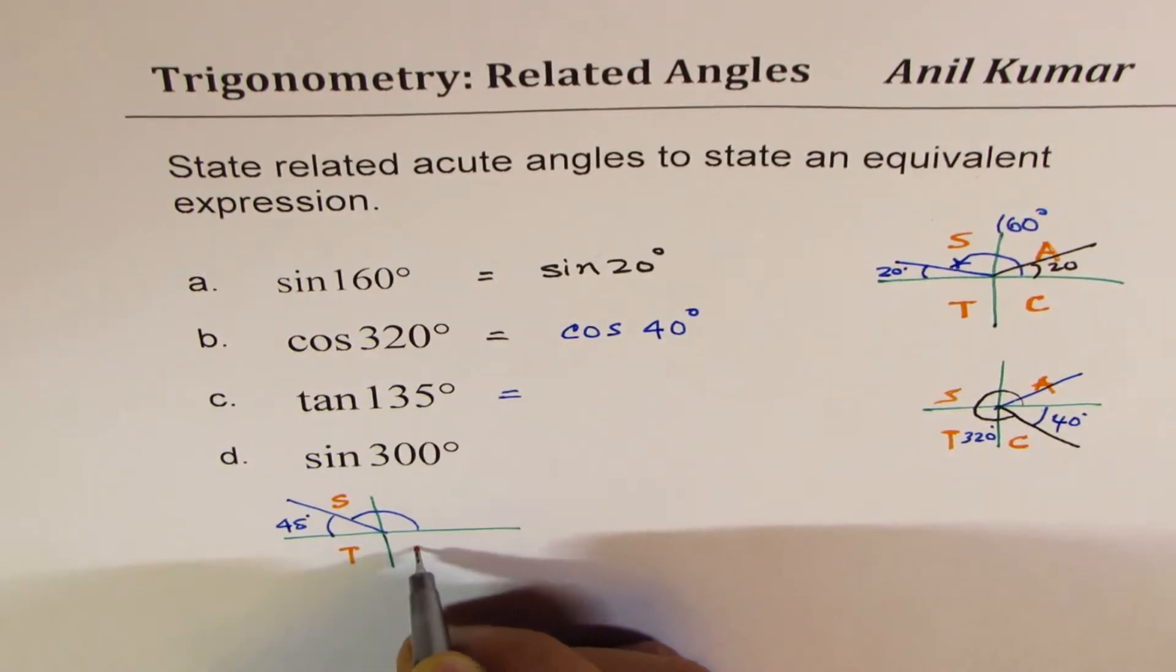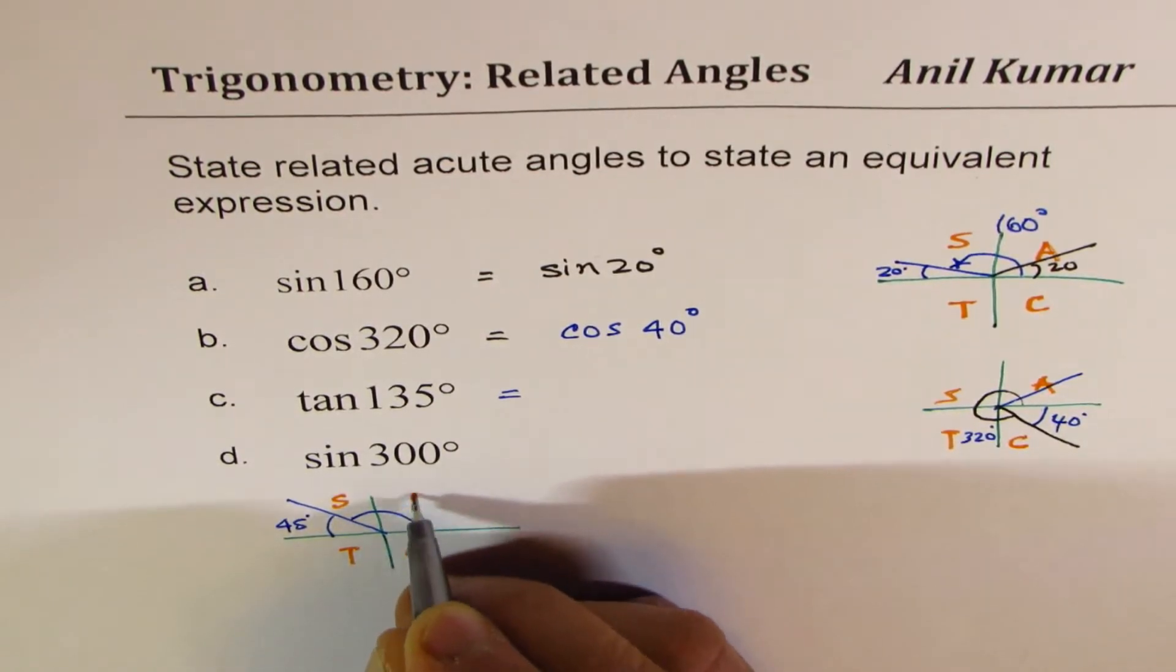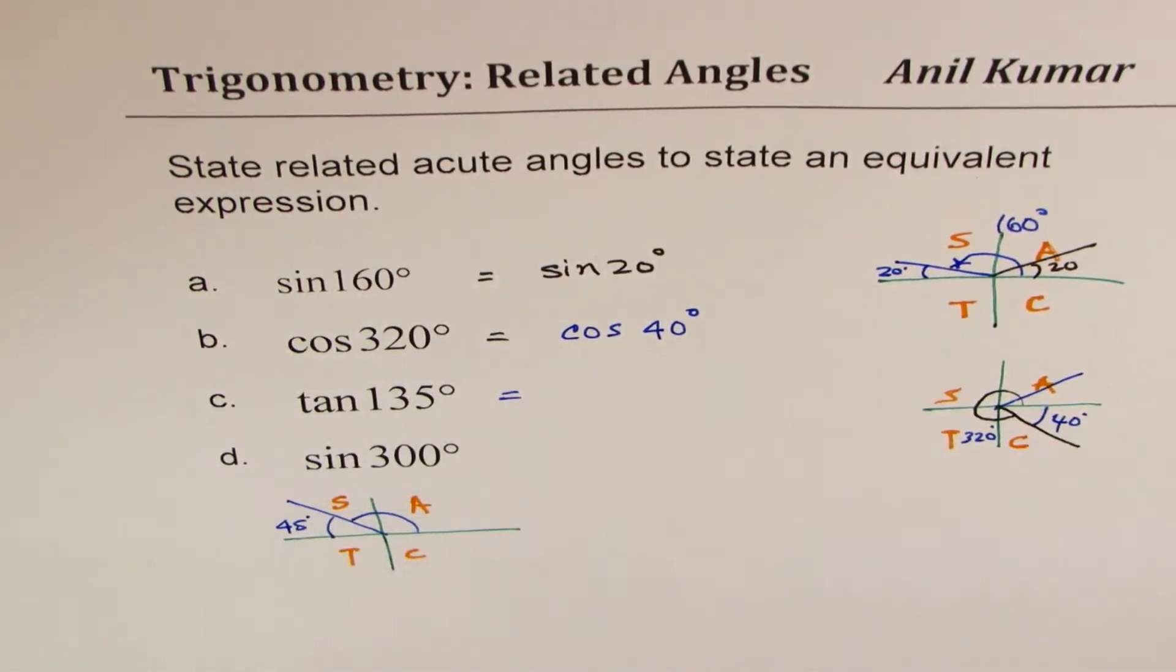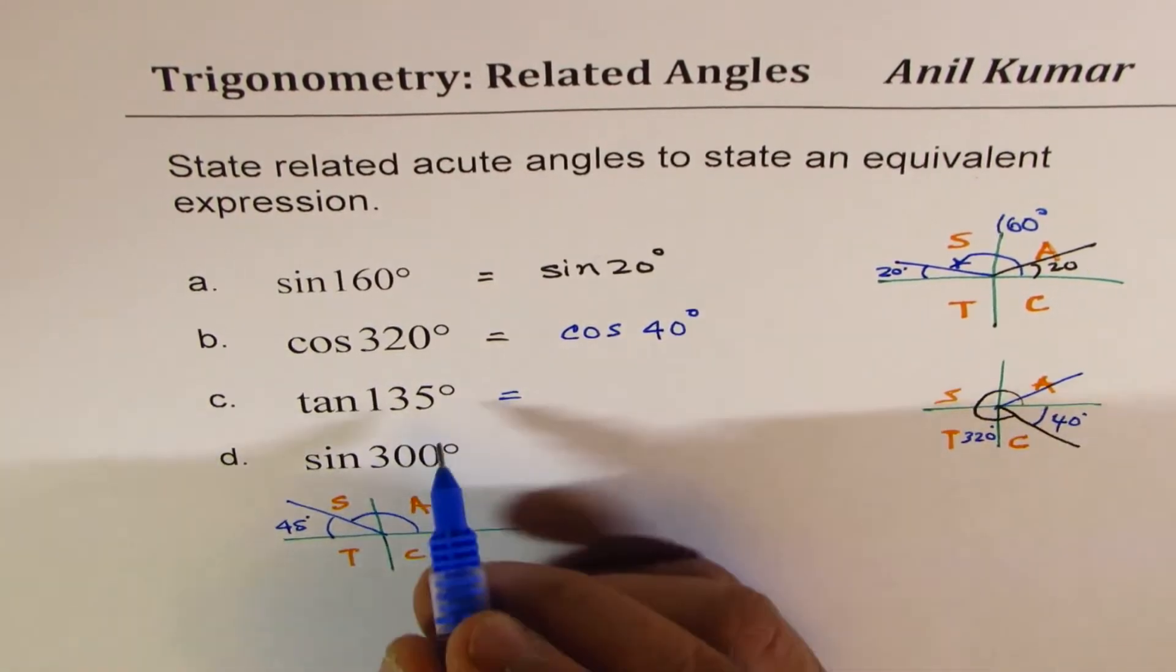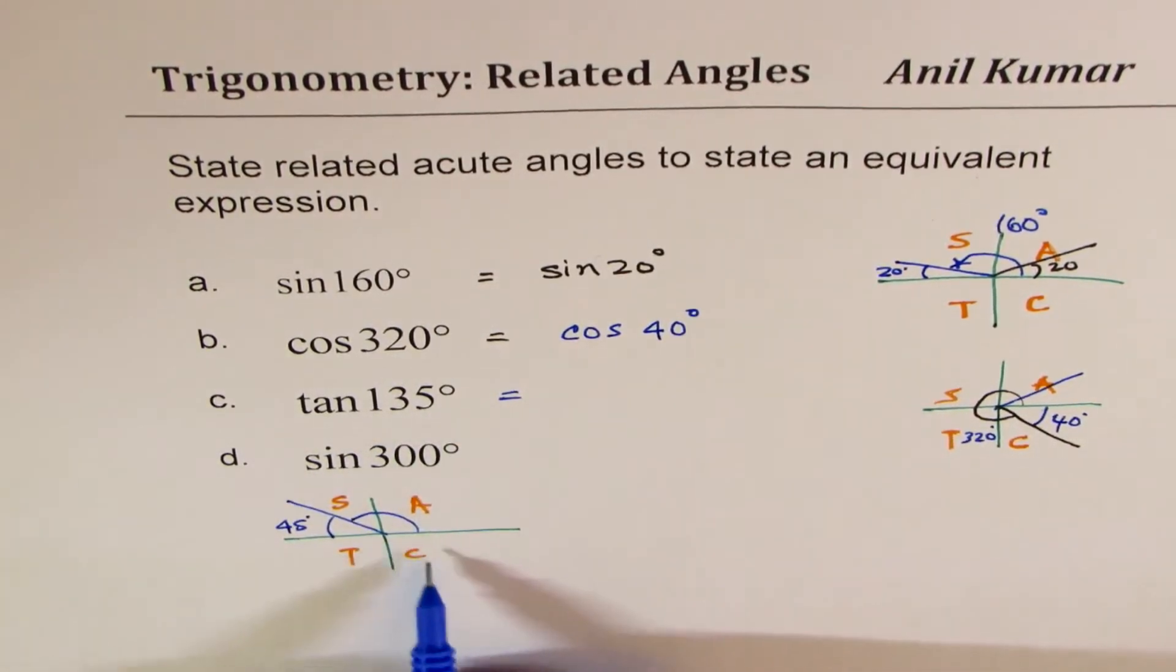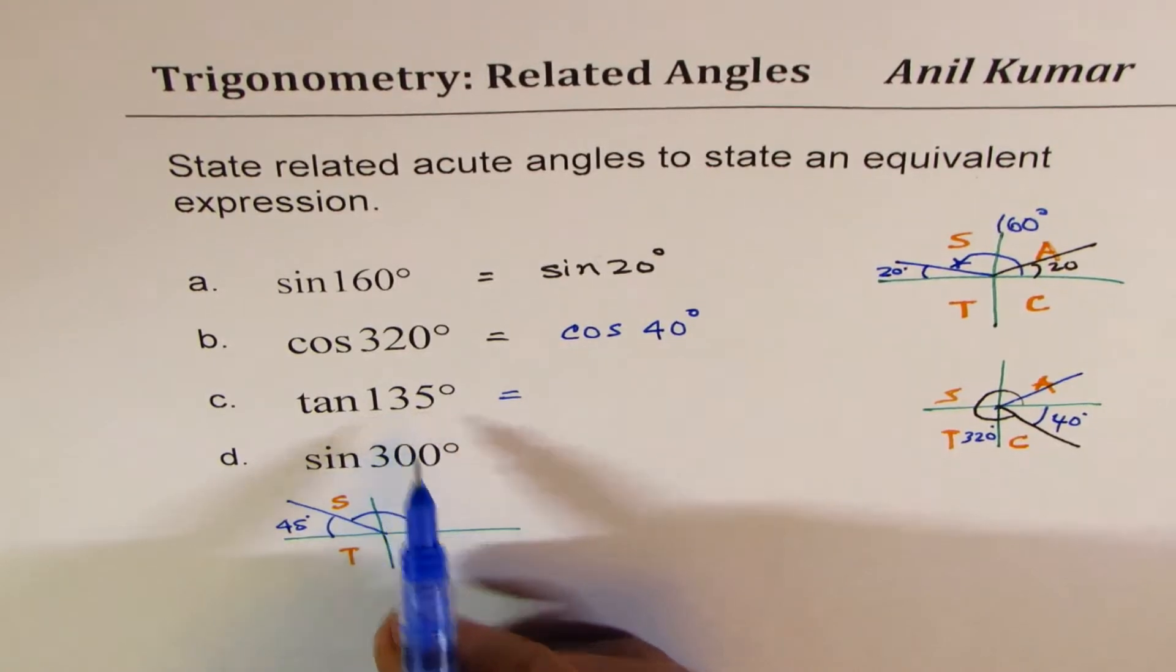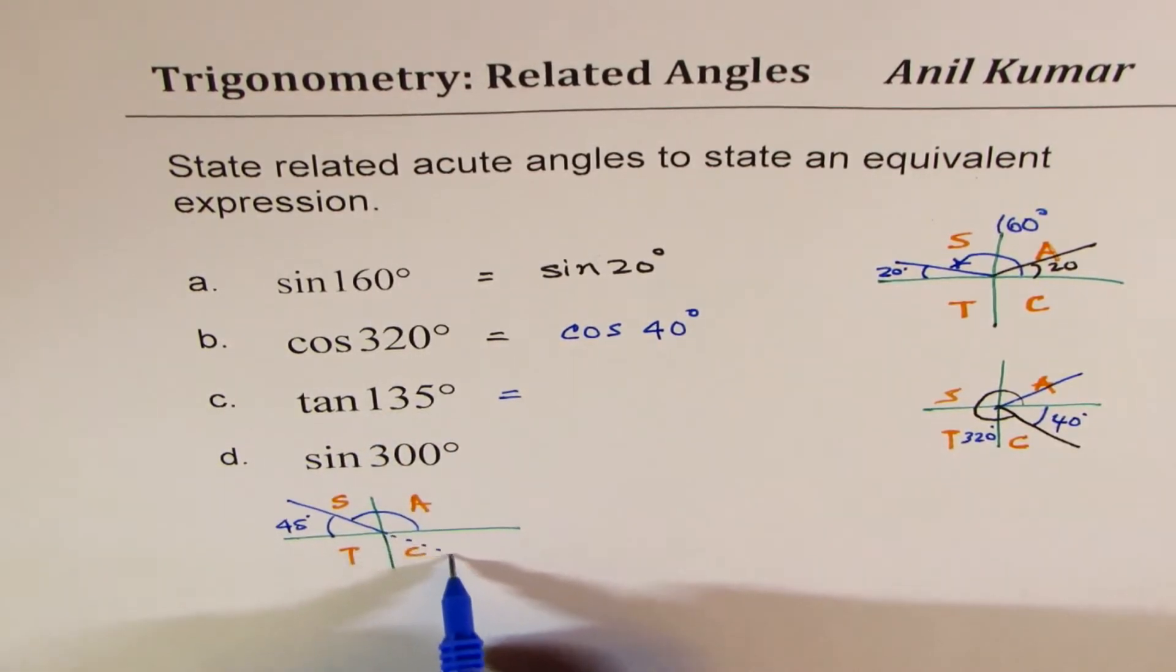Since tan is negative here – right, here actually sine is positive, tan is positive in quadrant 3 and 1 – here tan is negative. Since tan is negative, we can look for an angle which is giving us negative result, so it could be in quadrant 4.